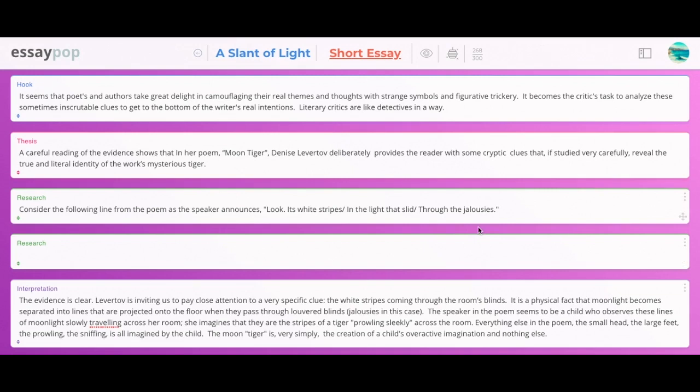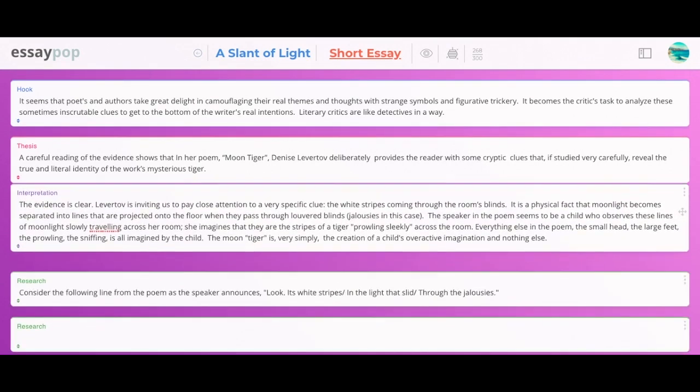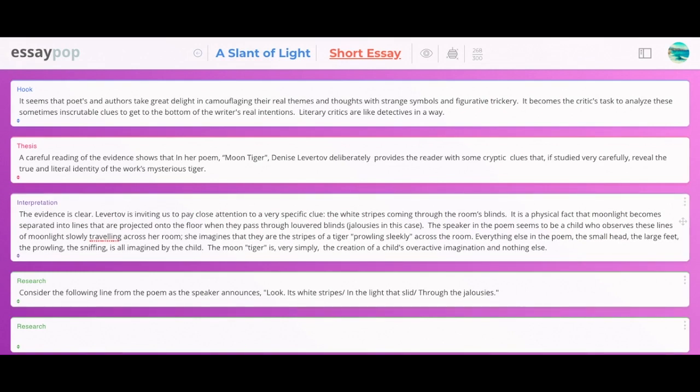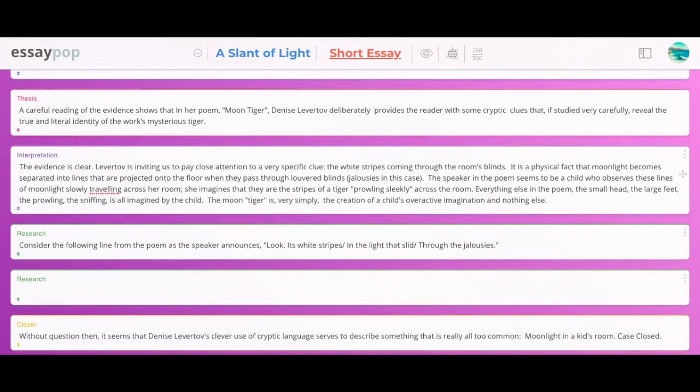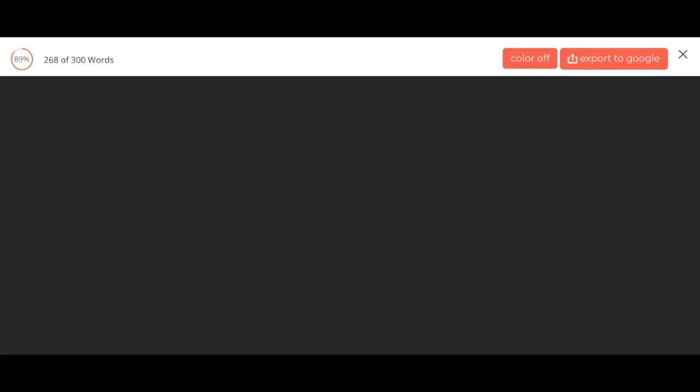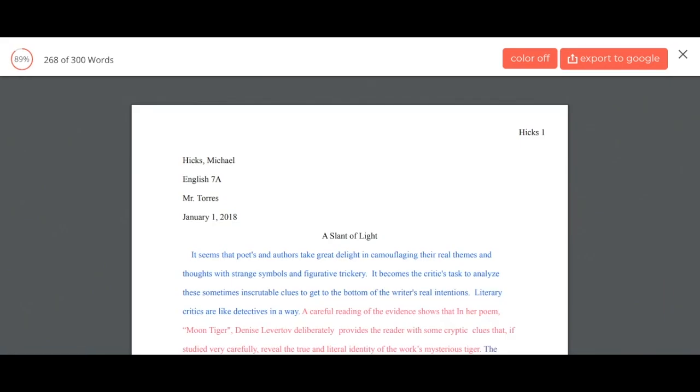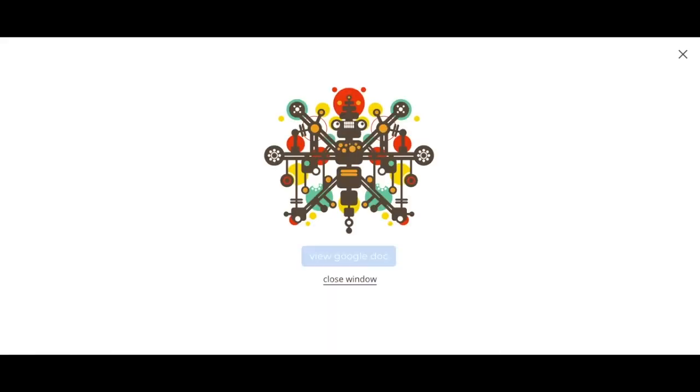Another thing you can do with EssayPop is you can move the elements around. So sometimes essay writers will want to start with their interpretation right after their thesis and then get into their research. That's easily done by moving the frames. If you want to preview your essay, you hit the eyeball icon, and that is going to bring up your essay in MLA format and color code it. The color coding indicates, for example, the hook in blue, the thesis in red, and so on. You can always turn the color off if you wish. And from this view, you can go ahead and print it and turn it into your teacher, or if you prefer, you can convert your document to a Google Doc, which is very handy.